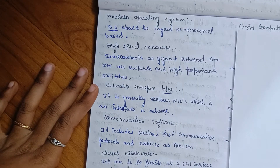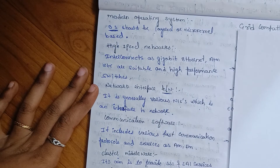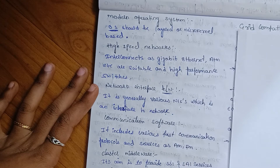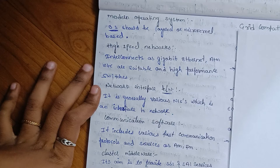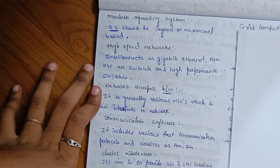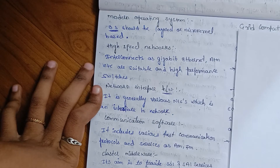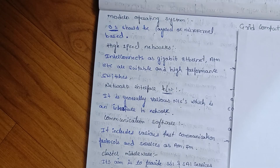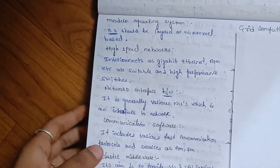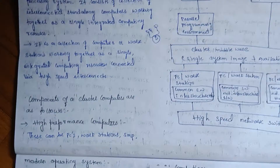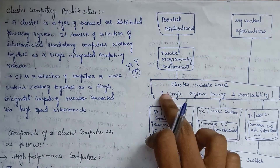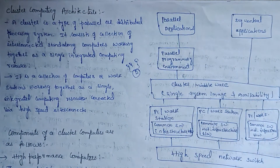Cluster middleware aims to provide single system image (SSI) services to applications. Both sequential and parallel applications can be run on a cluster — this is one of the key applications of cluster computing. The architecture supports both parallel and sequential workloads.